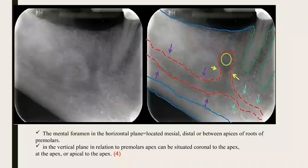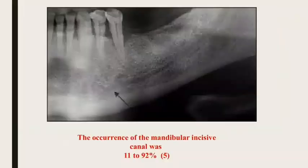You can see the mandibular incisive canal — the continuation of the mandibular canal anteriorly — which sometimes reaches the midline. The occurrence of this canal ranges from 11 to 92 percent; it can be distinguished in some radiographs and sometimes cannot be distinguished.